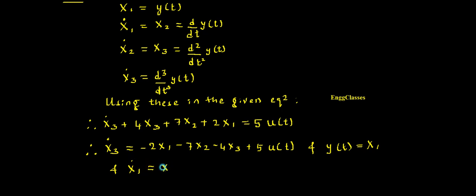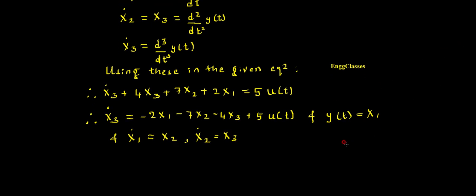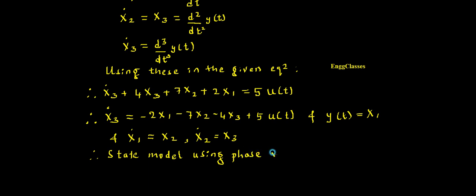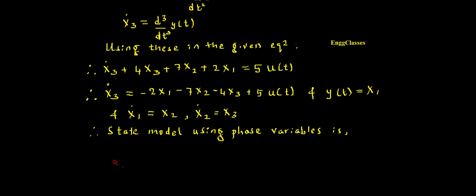I also have the equations: X1-dot is equal to X2, and X2-dot is equal to X3. From these state variables, I can now construct the state variable model. Therefore, the state model using phase variables is given as: